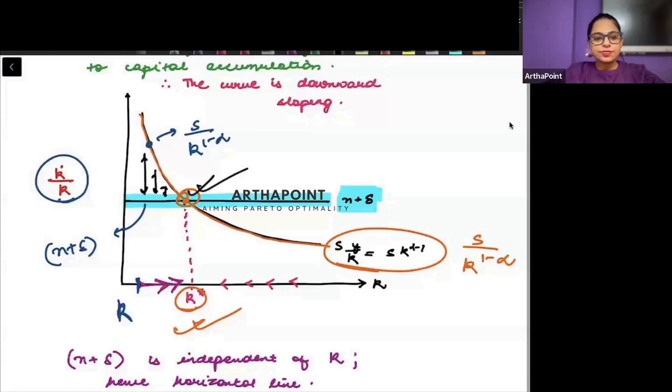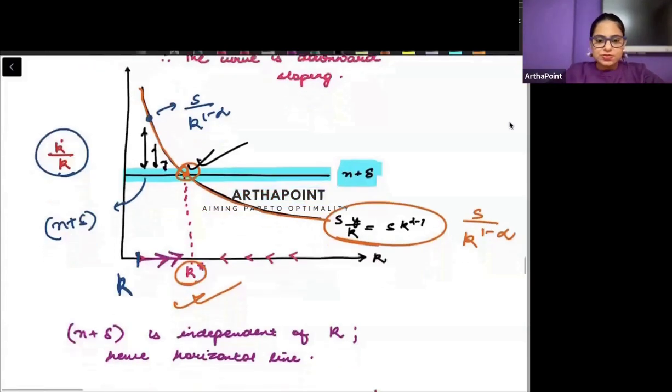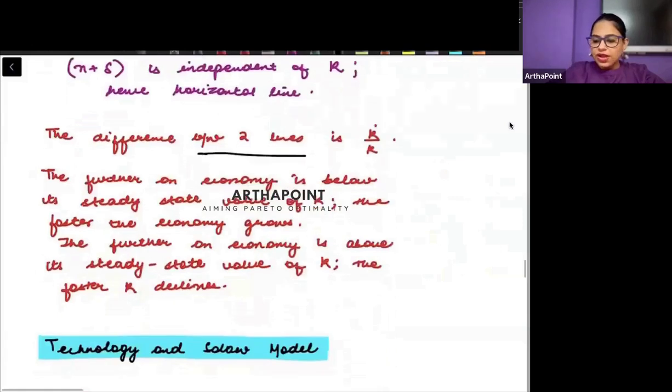Till you reach this rate. This is another curve that represents exactly the same thing that we tried to explain there. So the difference between the two lines is representing K dot by K.